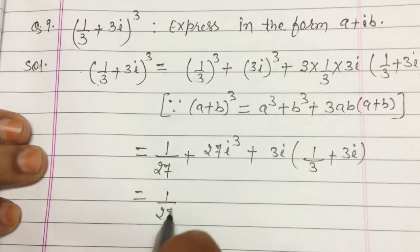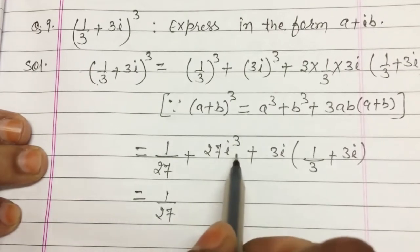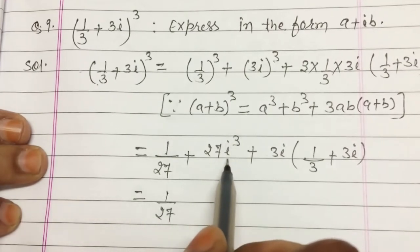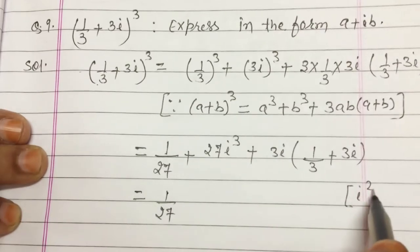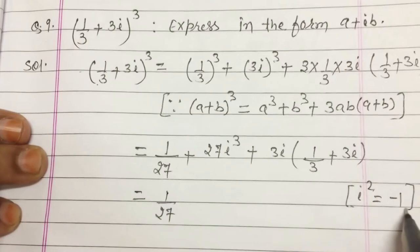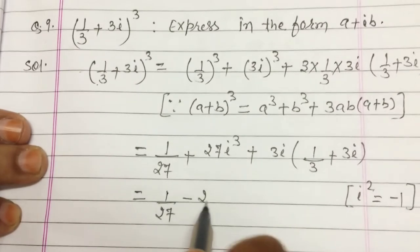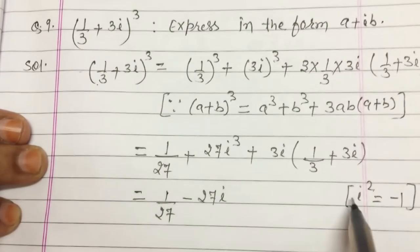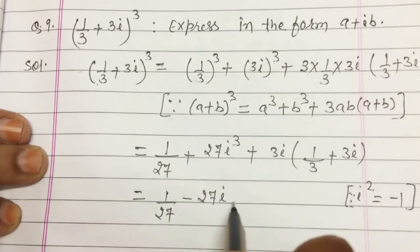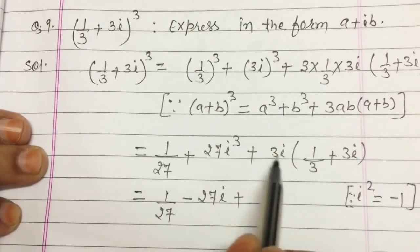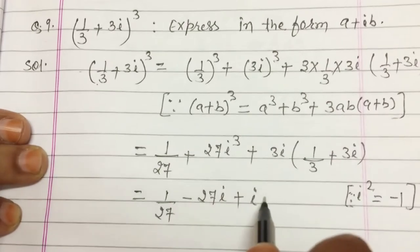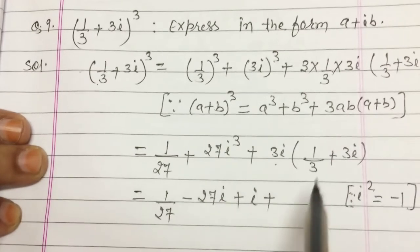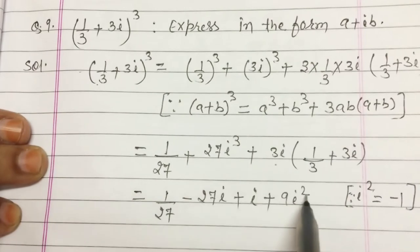It is 1/27, then it is 27i³. Since i³ = i²·i and i² = −1, i³ = −i, so it is −27i. And here, 3 and 1/3 cancel when we multiply 3i by 1/3, giving only i. Then 3i × 3i = 9i².